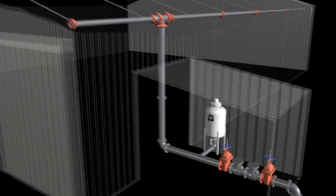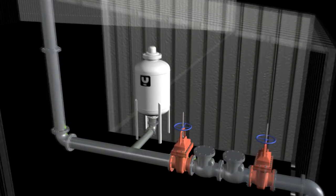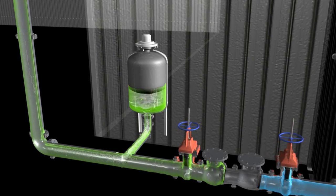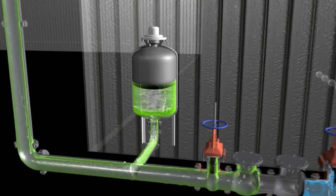With a bladder expansion tank installed downstream of the backflow preventers, the expanded volume of antifreeze flows into the bladder expansion tank.